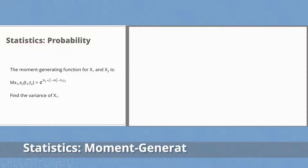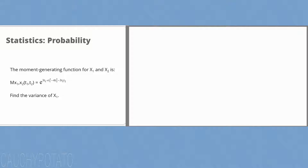Hey internet, for this video I'm going to solve a probability statistics problem. The moment generating function for x1 and x2 is mx1x2(t1, t2) equals e to the 3t1 plus t1 squared plus 4t2 squared minus 3t1t2. Find the variance of x1.